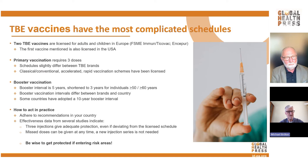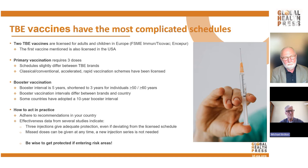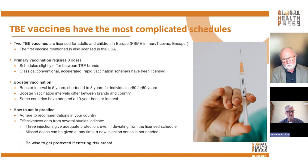If you need to be protected against TBE, just follow the rules in your country. In general, use the classical or conventional vaccination schedule. If you need protection at pace, you can use the accelerated or rapid schedule. Travelers to a TBE-endemic country can have trust in two injections for a limited time and should complete the third injection. For booster vaccinations, you can exchange brands. If you have missed a timely injection, this can be caught up at any time. Every vaccine injection counts. Be wise — get vaccinated if you are at risk of acquiring a TBE virus infection.